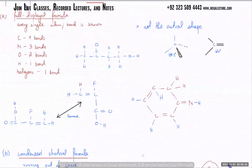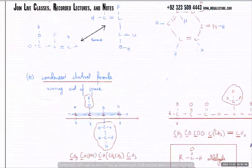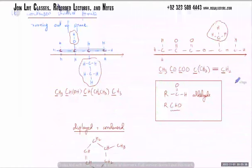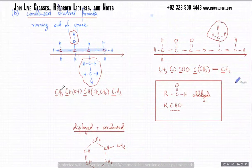We had talked about fully displayed formulas where you show every single atom and bond, and then we talked about the condensed structural formula. If you're running out of space, you can write the formula in just one straight line. For example: CH3, CH with an OH, CH with CH2.